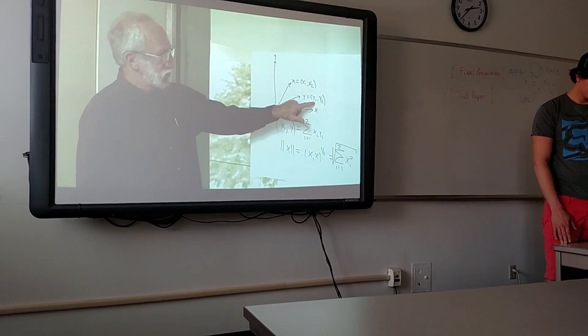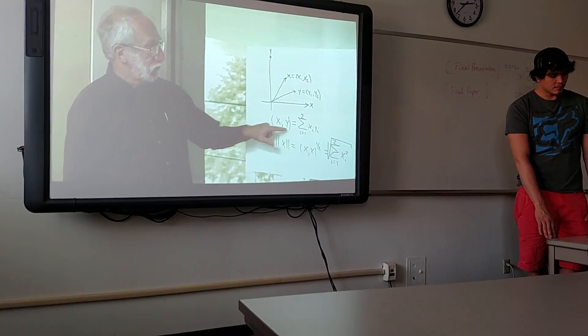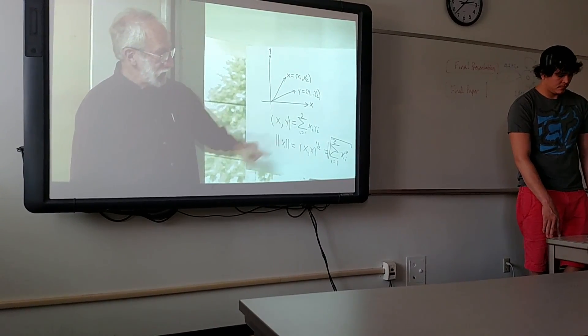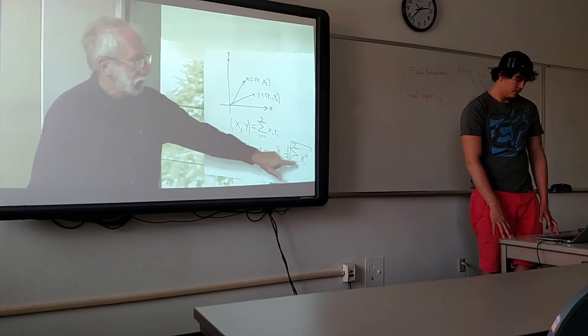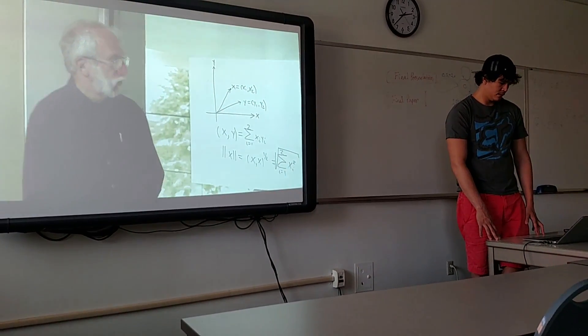Another vector, y, has coordinates y1, y2. We can define the dot product in this way, and we can define the length of the vector, sometimes called the norm, by this way, which is the sum of the squares of the coordinates.